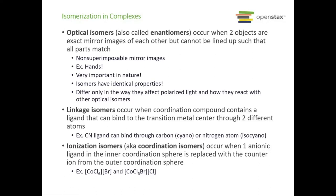Another type is linkage isomers, which occur when a ligand can bind to the transition metal through two different atoms. For example, the cyanide ligand CN has lone pairs on both carbon and nitrogen. If it bonds through carbon, it's called cyano; if through nitrogen, it's called isocyano. We also have ionization isomers or coordination isomers, which occur when an anionic ligand in the inner coordination sphere is replaced with the counter ion from the outer sphere — for instance, cobalt hexachlorocobalt bromide versus bromoheptachlorocobalt chloride. They have the same overall formula but differ in arrangement.